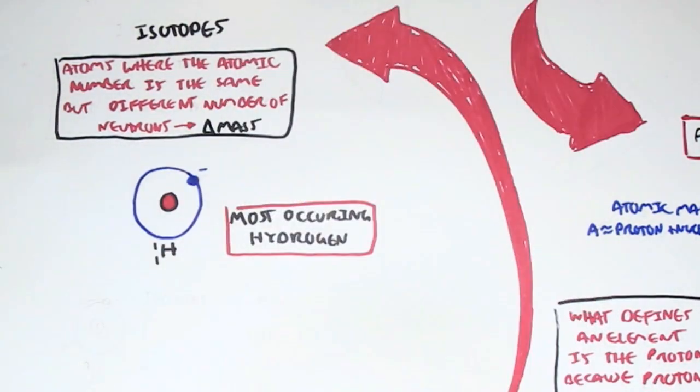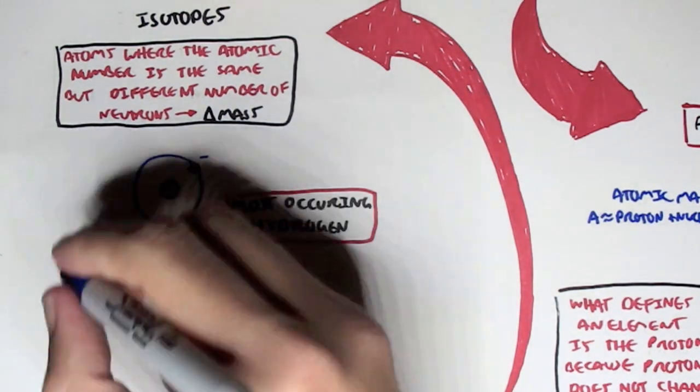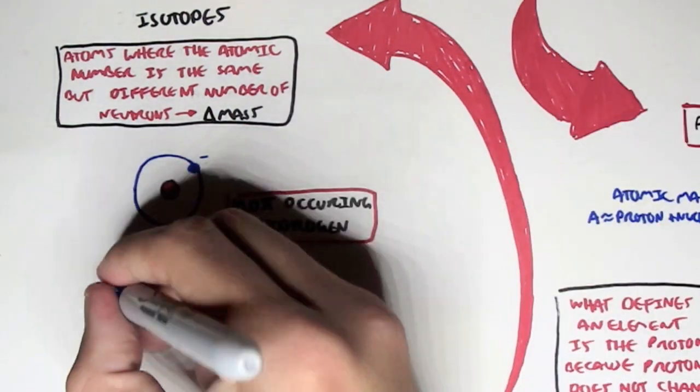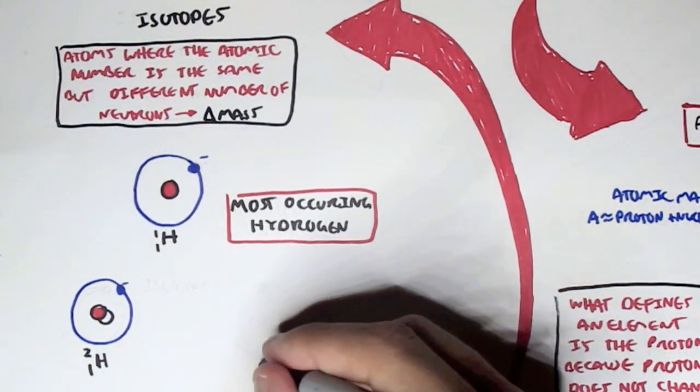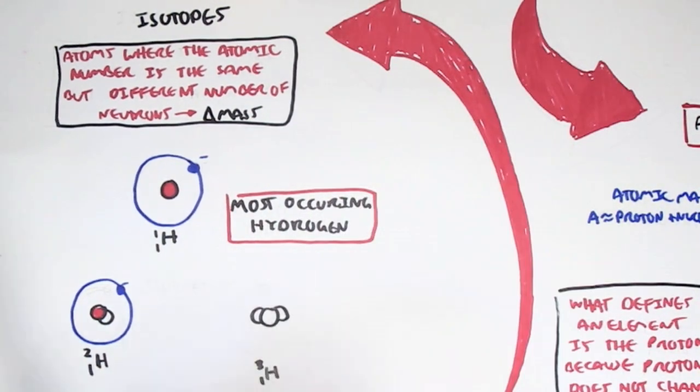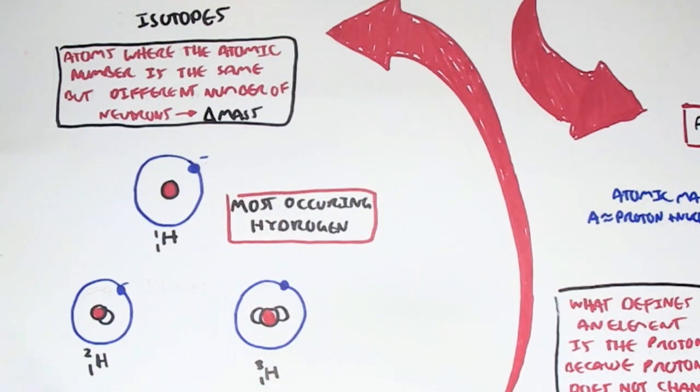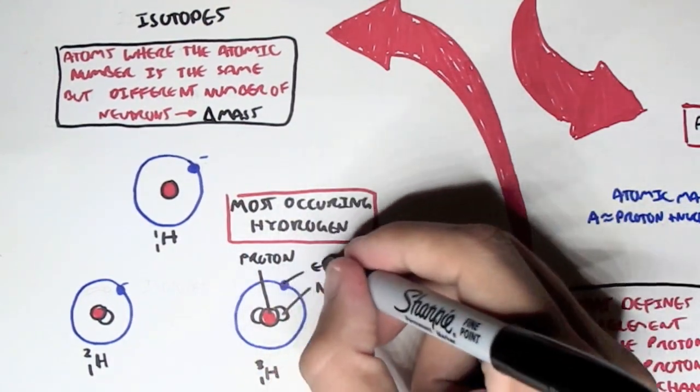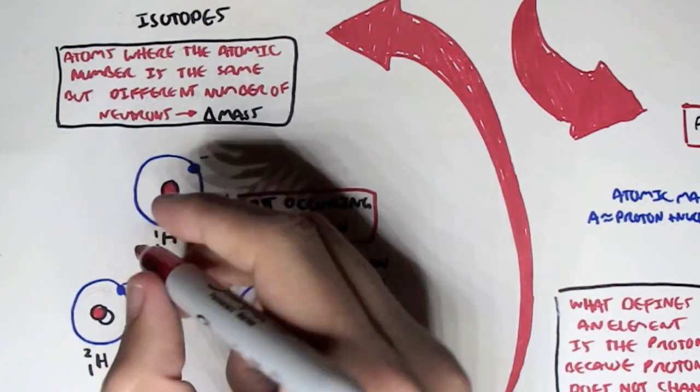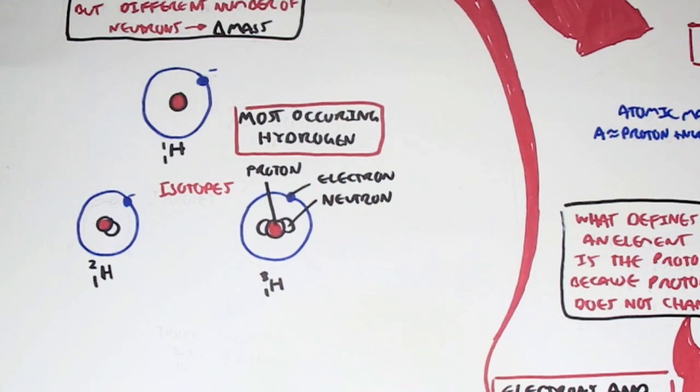However, we can also have hydrogen with the atomic mass of 2 and the atomic number of 1. So this would mean that there is still one proton, but there is one neutron and still one electron. There's also another type of hydrogen where the atomic mass is 3 and the atomic number is 1 still. So this would mean that there is still one proton because proton defines a hydrogen. And we have two neutrons. And these are all isotopes of each other because they consist of different numbers of neutrons. And because they consist of different number of neutrons, the mass of the whole atom would change.